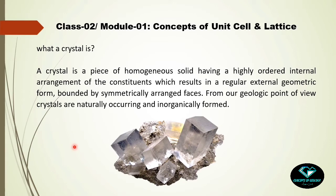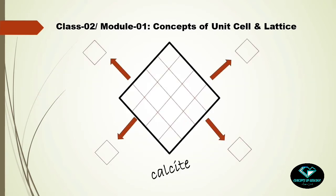Look closely at the definition — crystals are described as a piece of homogeneous solid, meaning there is no bound on size. The constituent atoms can be extended to infinity in any direction. What is important is that crystals must have a regular geometric form bounded by faces. If I take a rhomb of calcite and try to break it, it will fragment through its cleavages, and all the fragments will have a smaller but similar shape to the large rhomb. Look at the animation here.